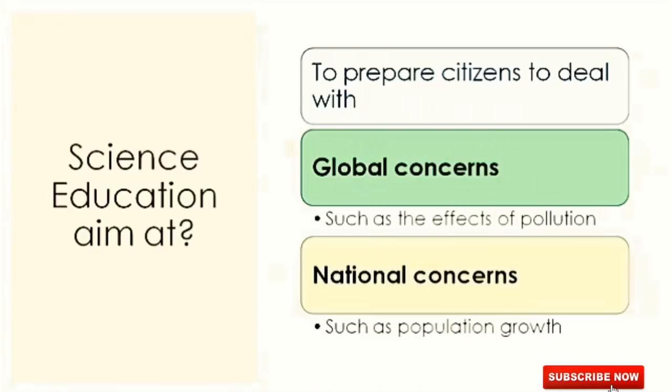Science education, when we talk about science for all, aims at preparing citizens to deal with global concerns such as the effects of pollution. We asked people to switch off their vehicle engines at traffic lights. There was the obvious question of who are we to suggest anything to them. We said that we have limited fuel and if we are wasting it at traffic signals, we will soon be running out of fuel.